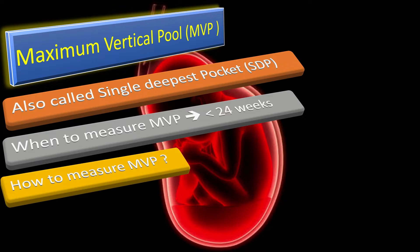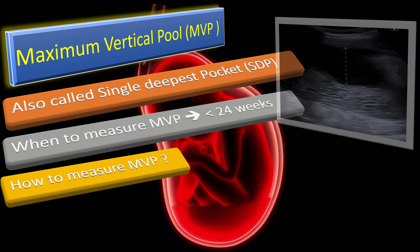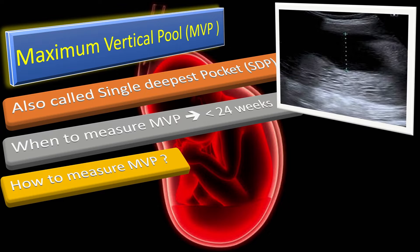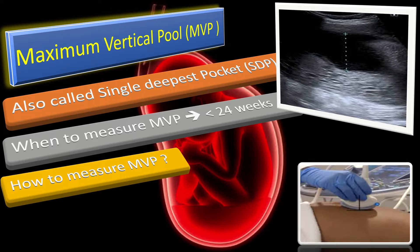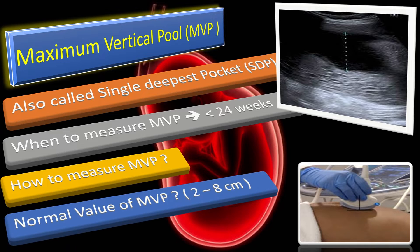To measure the maximum vertical pool, first find the largest pocket of amniotic fluid free of cord and fetal parts. Measure the greatest dimension with the ultrasound transducer perpendicular to the uterus. The normal value of maximum vertical pool is 2 to 8 cm.